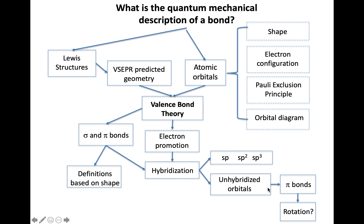Let's finish up our story looking at a quantum mechanical description of a bond using valence bond theory. We'll pick up on the idea of the formation of pi bonds that we find when we have unhybridized p orbitals with unpaired electrons, and how that has implications for the shape and features like rotation.